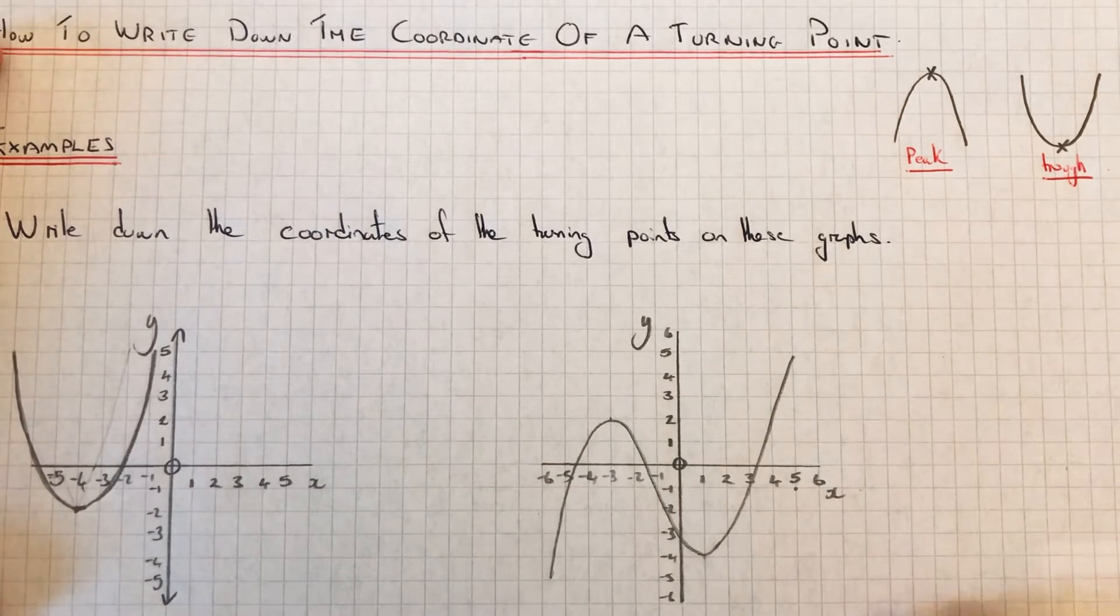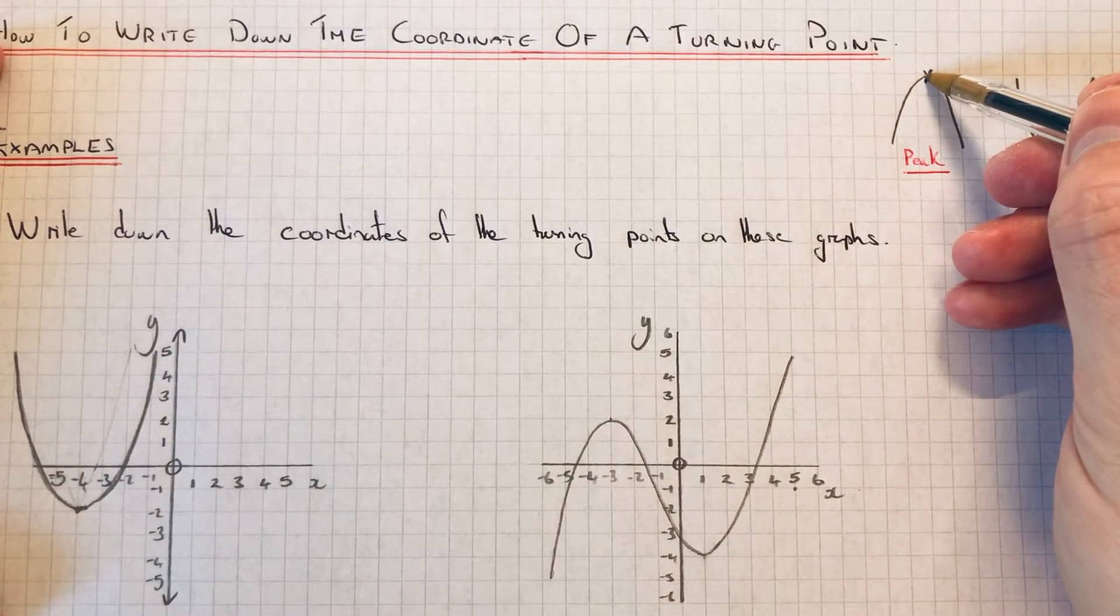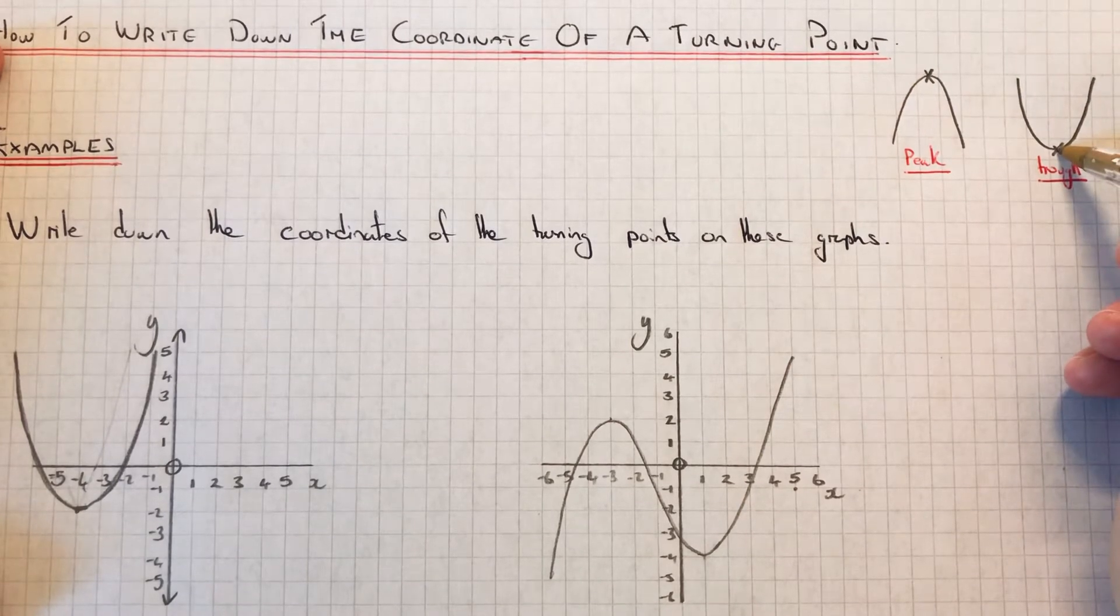So a turning point is where there is a peak, so we're looking at the point at the top of the peak, or where we've got a trough, so we're looking at the point at the bottom of the trough.